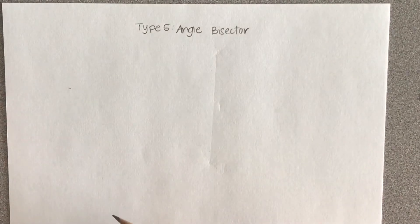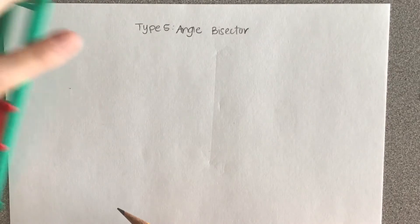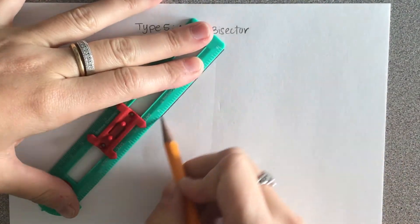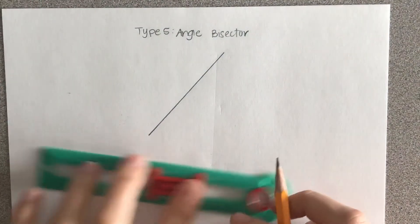The first thing I need to do is draw an angle. I'm going to draw an acute angle, so something that is smaller than 90 degrees.